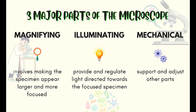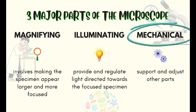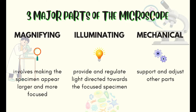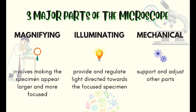There are three major parts of the microscope. These are magnifying, illuminating, and mechanical parts. Magnifying parts involve making the specimen appear larger and more focused, while illuminating parts provide and regulate light directed towards the focused specimen. And lastly, mechanical parts — they support and adjust other parts.